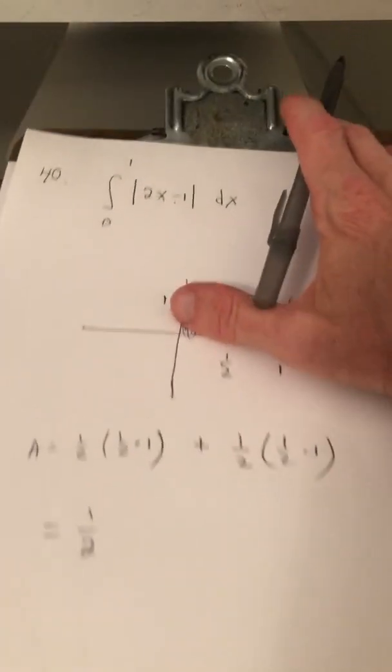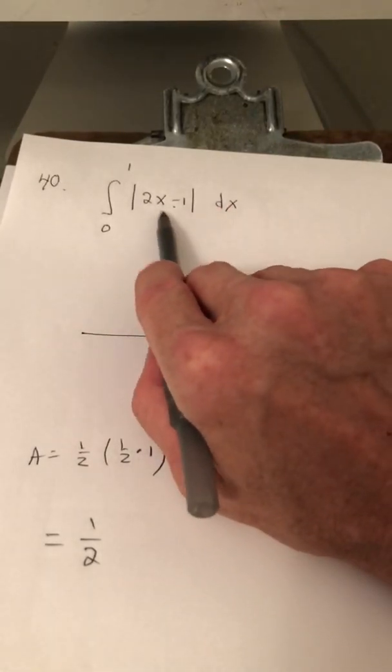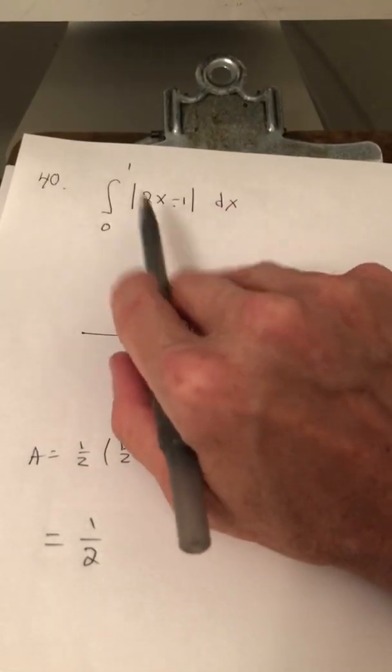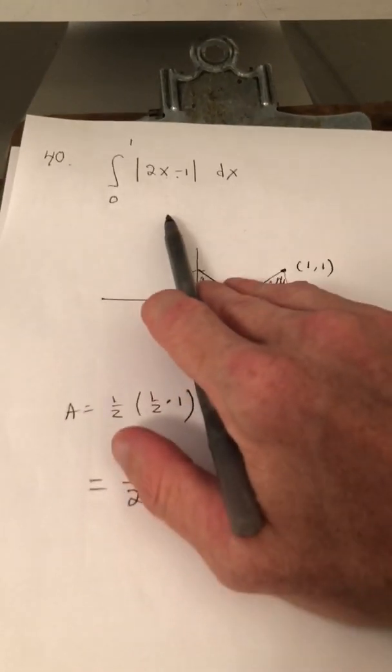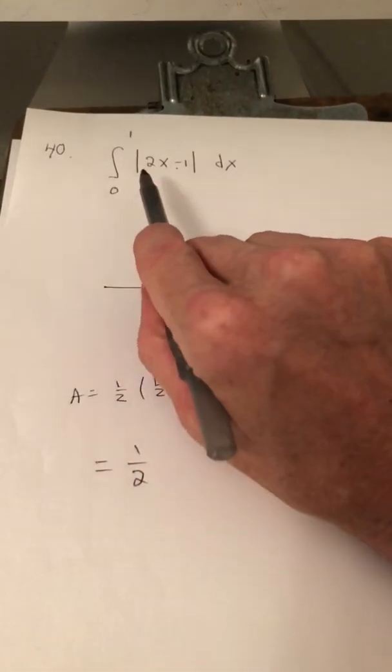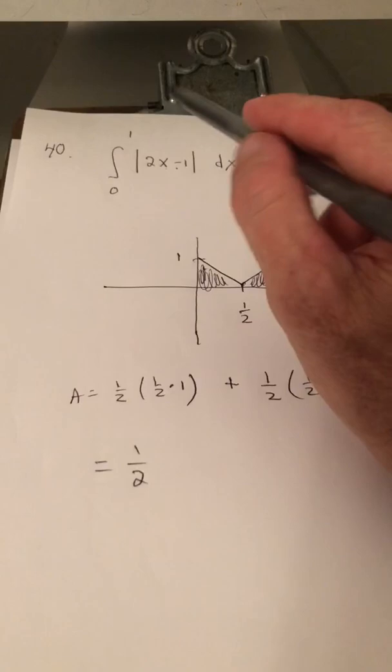Number 40. Our friend, the absolute value. Right here. So remember the shape of the absolute value function. It's a V.